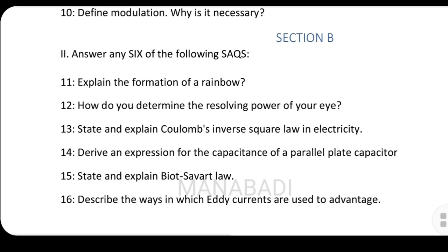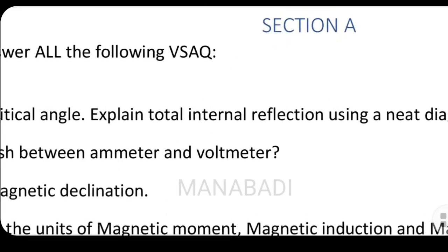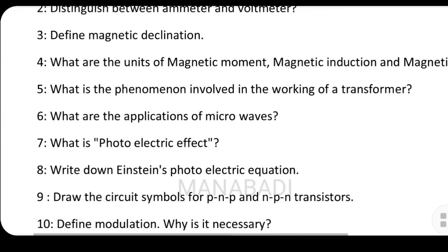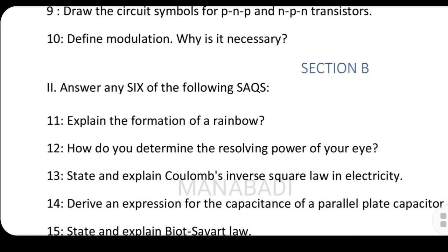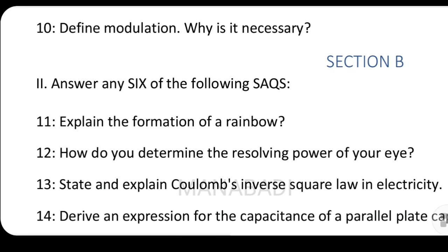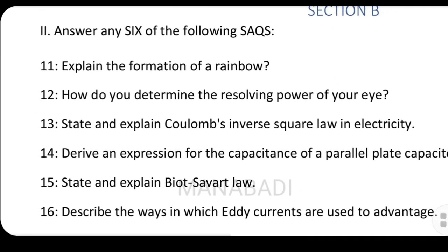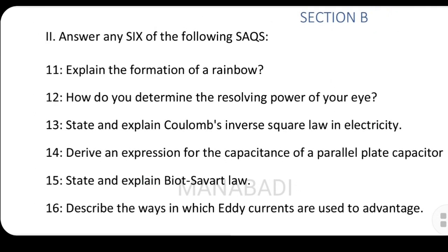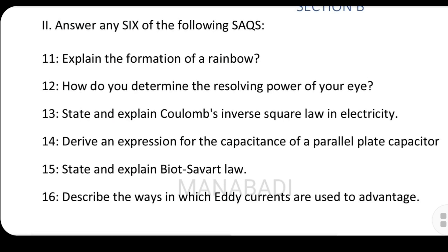Explain the formation of rainbow. So formation of rainbow — dispersion of refractions and total refractions, randu influence buti maa ki formation of rainbow unta di. How do you determine the resolving power of your eye? State and explain Coulomb's inverse square law in electricity. Derive the expression for the capacitance of a parallel plate capacitor.